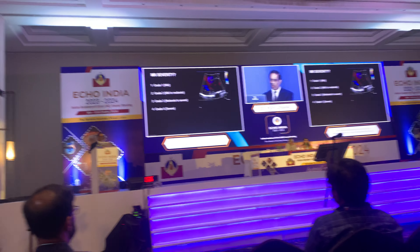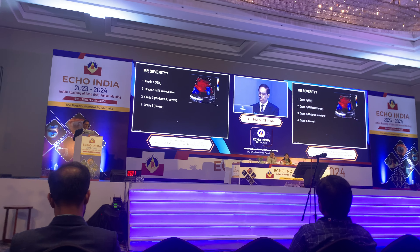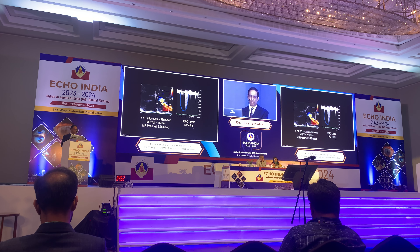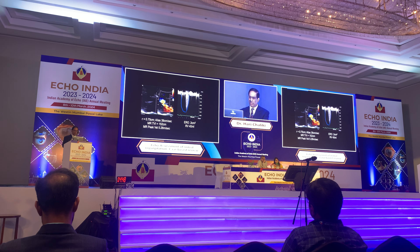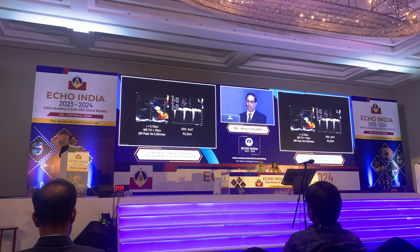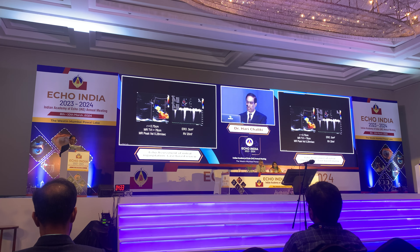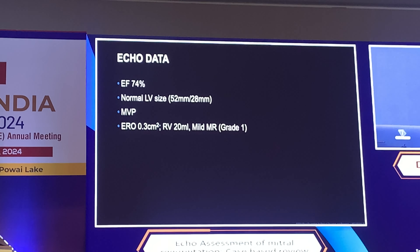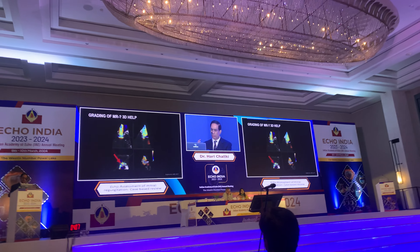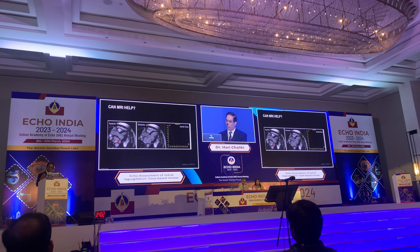Armed with this, let's apply the calculations to our case. You shifted the baseline and got a VTI of the MR of 152 cm, ERO of 0.3 cm², and regurgitation volume of 40 mL — suggesting moderately severe grade 3. However, this is mid-to-late systole mitral valve prolapse, so the regurgitation doesn't occur throughout systole. Adjusting the VTI to only the period of regurgitation, the actual volume drops to 20 mL — mild MR. The LV size is also normal, which makes severe chronic MR unlikely. 3D vena contracta area can also be used, especially for elliptical orifices in ischemic MR.